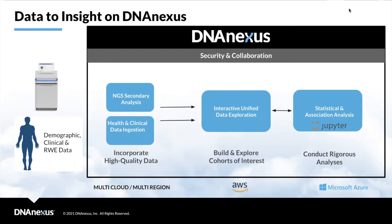Basically, DNA Nexus formally did a lot of secondary analysis work with its collaborators and clients. Now, a lot of the new work is health and clinical data ingestion, thinking about phenotypes in this big environment we have called Apollo, where you can build and explore cohorts of interest. You have clinicians you collaborate with — they can split cohorts — and then you can conduct rigorous analyses. It's a great way for clinicians to interface with data scientists.